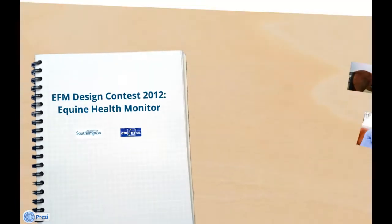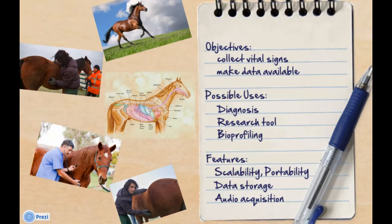The goal of the Equine Health Monitor is to collect different vital signs of horses and make the collected data available to the end user with a web interface. The system can be used for remote diagnosis, as a research tool, or to perform bioprofiling on horses.